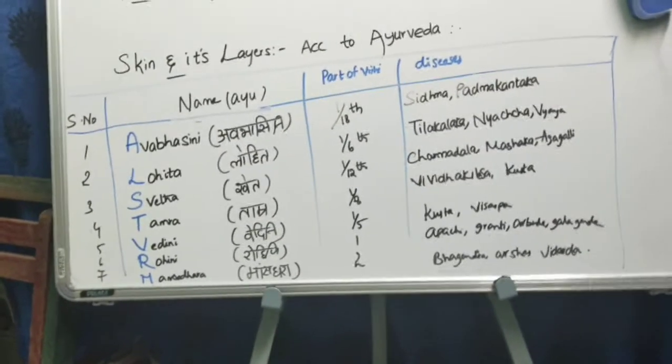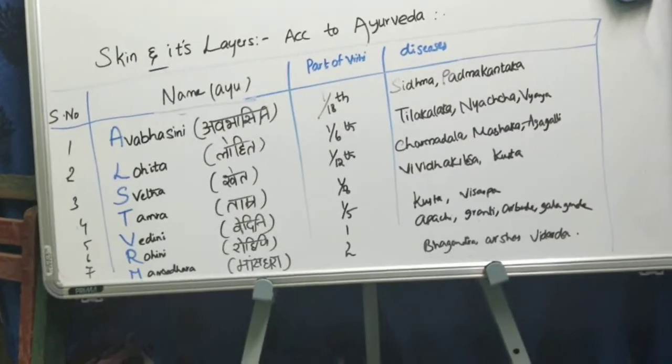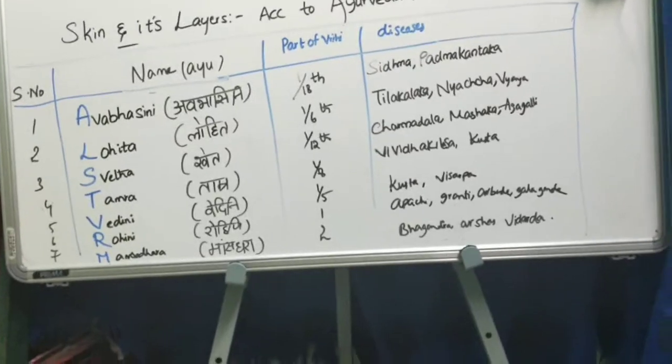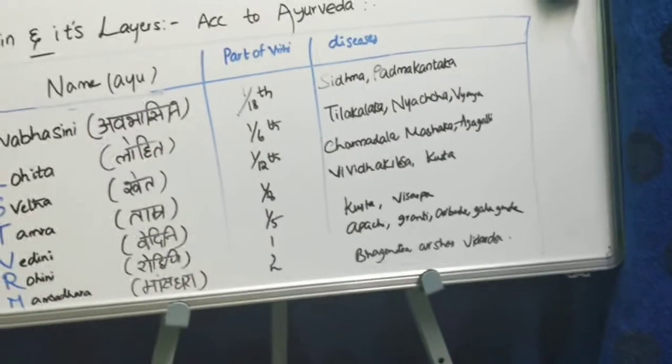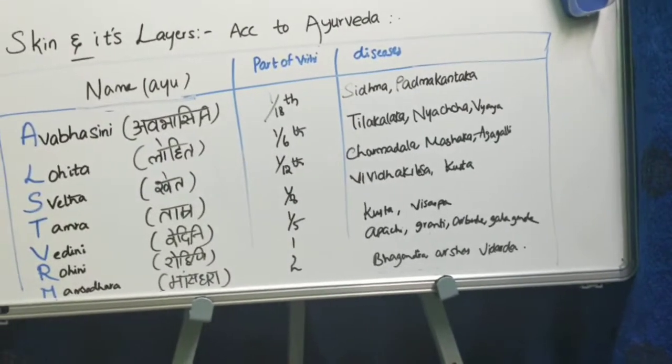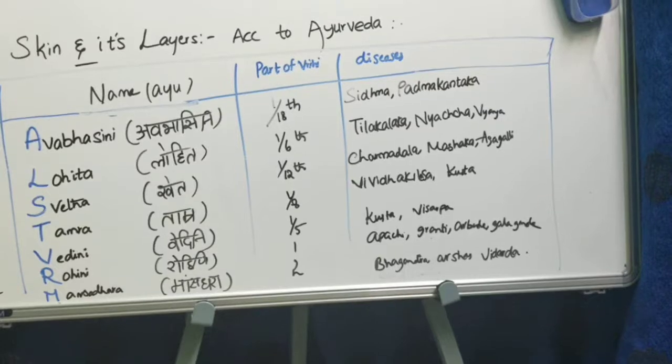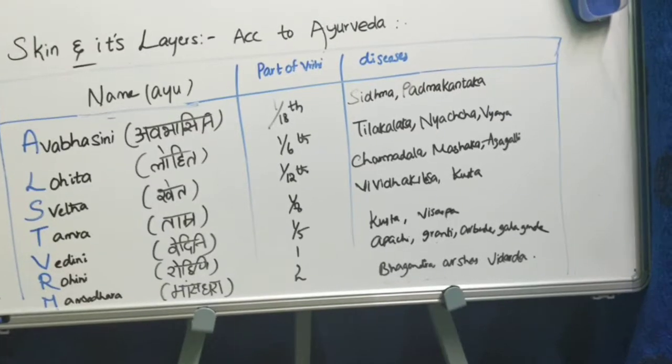A mnemonic to remember the seven layers in order is: 'Alohashweta Veroma' — Avabhasini, Lohita, Shweta, Tamra, Vedini, Rohini, Mansadara.